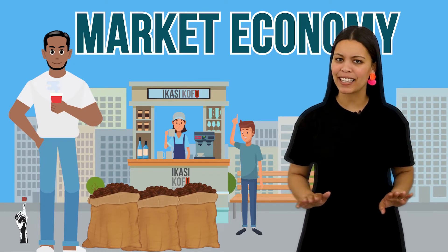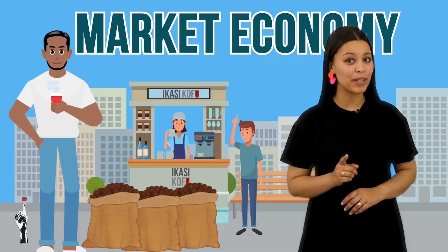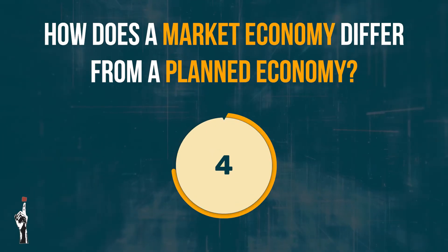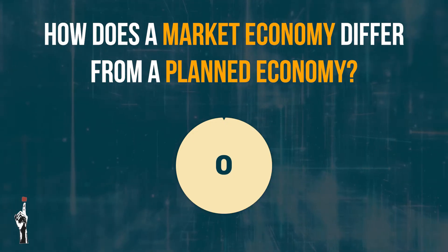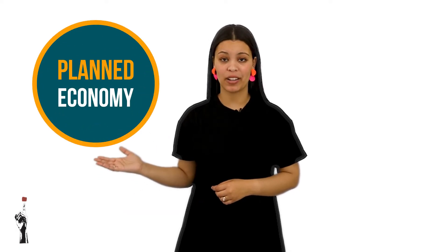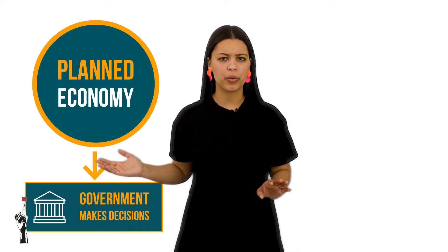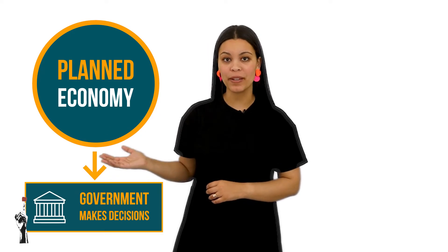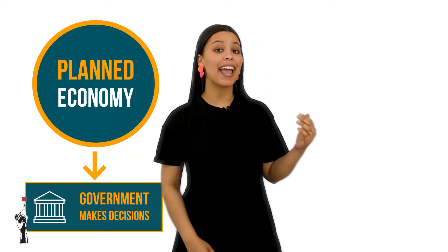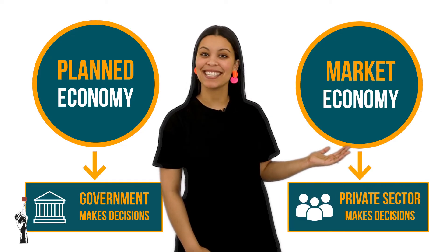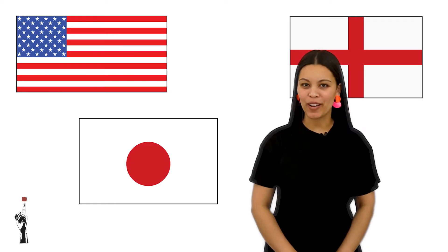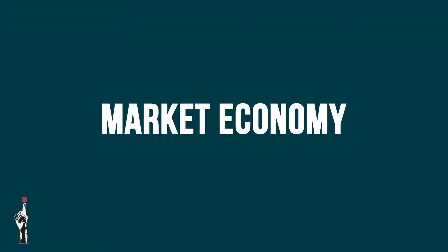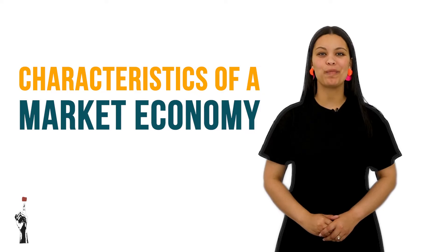This is definitely not like the planned economy. Do you agree? In a planned economy the government owned all the resources, businesses and property, but in a market economy the citizens take the lead. The USA, England and Japan are all examples of market economies.